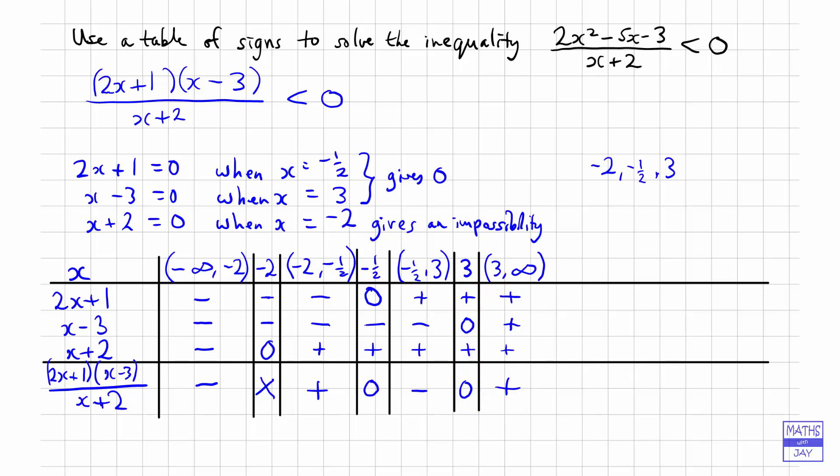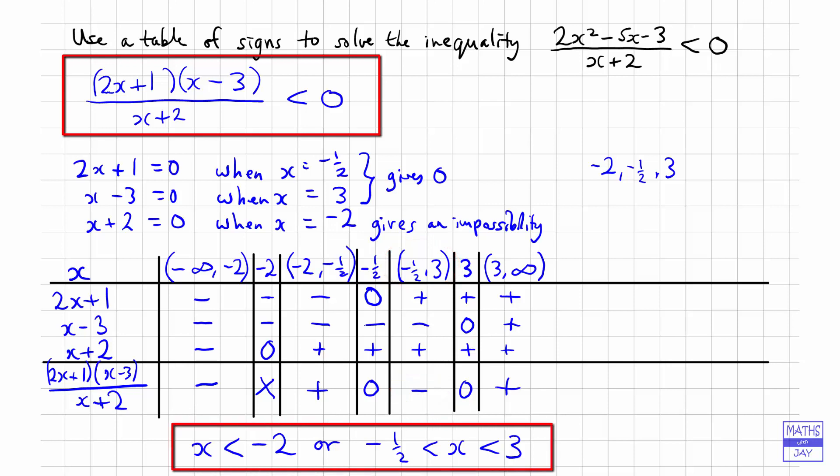So let's remind ourselves of what we're trying to do. We want to know when the fraction is less than 0. So therefore, we're interested in the columns where we've got a minus at the bottom. So we can see the first column is one of those. So we know that the first part of the solution is that x is less than minus 2. And there's one other column that's got a minus at the bottom of it. And that's the one where we've got minus a half and 3 at the top. So x is between minus a half and 3. So we can write that as minus a half is less than x is less than 3. So we have solved the inequality by writing out a table of signs.